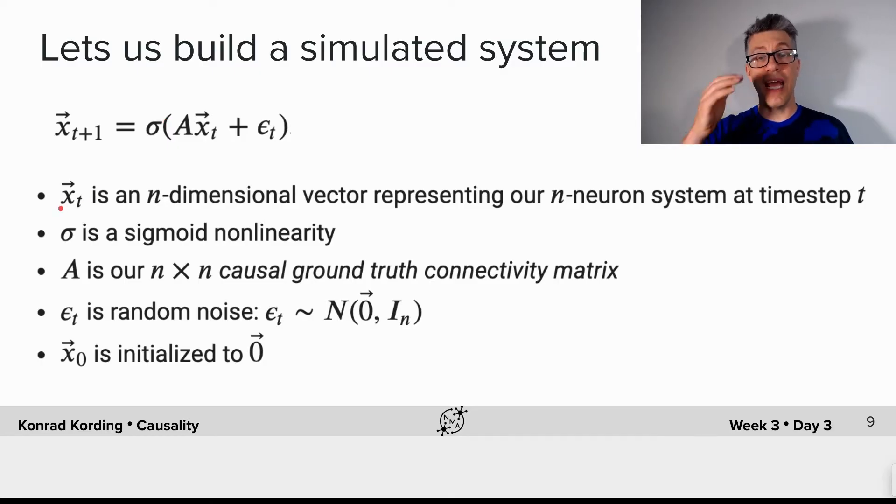X is an n-dimensional vector representing our n-neuron system at time step t. Sigma is a sigmoid non-linearity. A is an n by n causal ground truth connectivity matrix. This is how every neuron actually influences each other neuron. Epsilon_t is random noise drawn from N(0, I_n) and initially we set the vector to be zero.